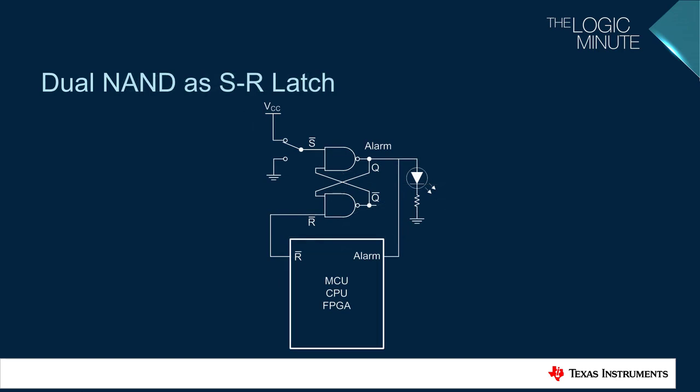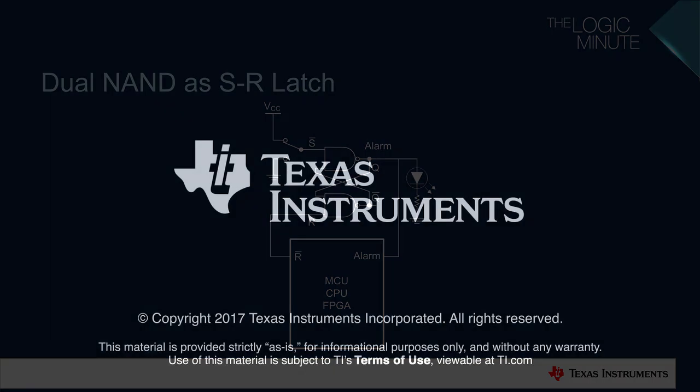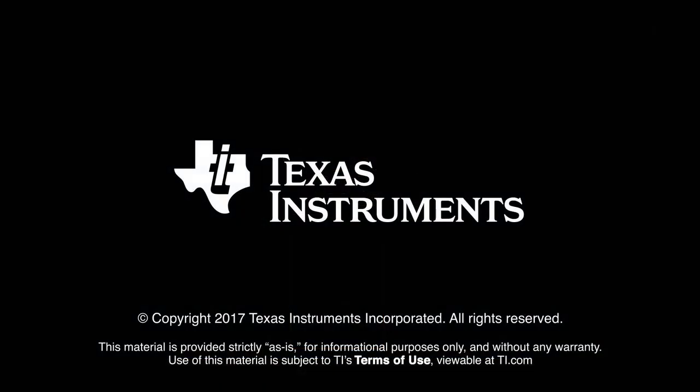Here we see a different alarm circuit that uses NAND gates instead of NOR gates. By doing this, the latch inputs are now active low. The button was replaced with an MCU, which has the alarm circuit fed into it, allowing for the event to be addressed and the latch reset.